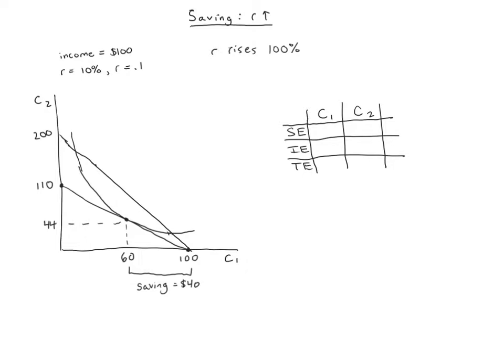We know that as the interest rate goes up it effectively makes it more expensive to consume today because if you want to get that dollar today you have to give up a dollar tomorrow and the interest you could have earned, and now that interest you're giving up is even bigger than before. So our substitution is going to be towards consumption in period two and away from consumption in period one.